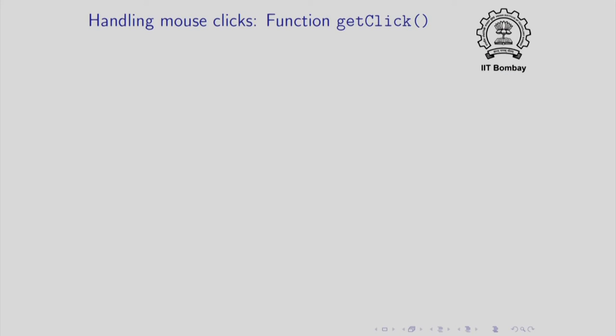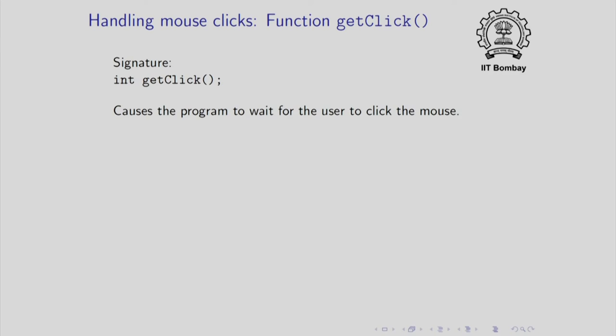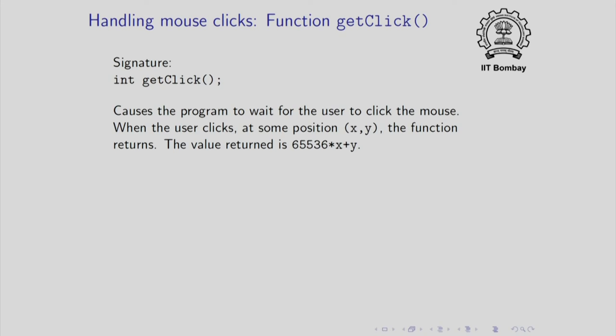There is a very simple function provided in simple CPP called getClick, which allows you to handle mouse clicks. GetClick takes no arguments and returns an integer. When you call getClick, it causes the program to wait for the user to click the mouse — similar to waiting for keyboard input. When the user eventually clicks at some position (x, y), the function returns. The return value is 65536 multiplied by x plus y, where 65536 is 2 to the power of 16. This puts x in the first 16 bits and y in the remaining 16 bits of the integer.